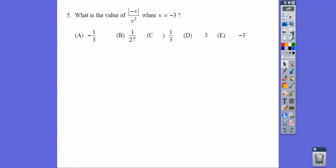All right, so what's the value of this? We're going to plug in X equals negative 3. Negative negative 3 is positive 3, and then negative 3 squared is 9, so we get 3 over 9, which is 1 third, choice C.